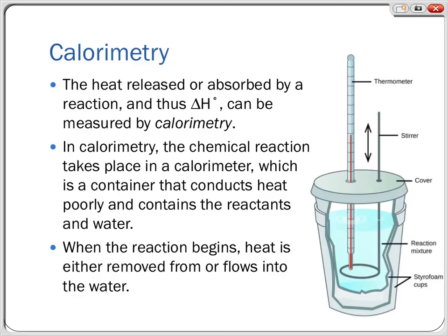Calorimetry works by doing a chemical reaction inside a device called a calorimeter, which is a container that conducts heat very poorly and contains the reactants, products, and water. Over on the right I have a picture of what's called a coffee cup calorimeter, which you can build yourself. It's made up of two nested styrofoam cups — styrofoam is a very poor conductor of heat, and nesting them creates an air gap that makes it an even worse conductor.